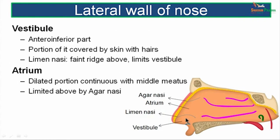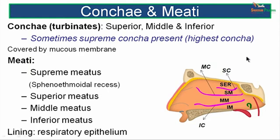The vestibule is the anteroinferior part of the lateral wall of the nose, covered by skin with fine hair known as vibrissae. Posterosuperior to it is the atrium — a dilated portion continuous with the middle meatus posteriorly, limited by a mucosal fold directed downwards and forwards known as the agger nasae.